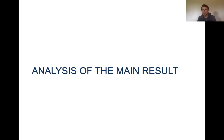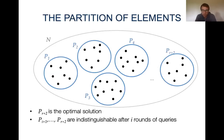That was the impossibility result for one-adaptive algorithms — with one round of queries. The main technical difficulty in obtaining the main result is to extend this construction from one round to multiple rounds. I would like to discuss a few main ideas for this extension. For the partition of elements, instead of three parts, if we want to show a lower bound for R rounds of queries, we use R plus 2 parts.